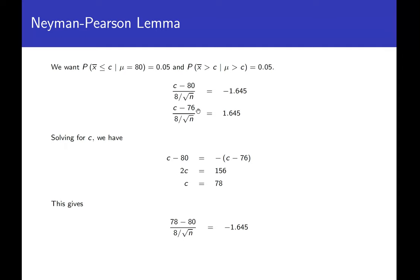So the critical region bound C equals 78, regardless of N. Plugging 78 back into the first equation and solving gives N approximately equal to 43.2964. The problem says approximate, so we use N equals 43. Therefore, testing mu equals 80 versus mu equals 76 with critical region sample mean less than 78 and sample size 43 gives a significance level of 0.05 and a power of 0.95.